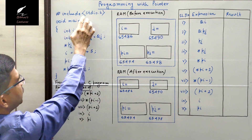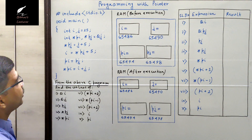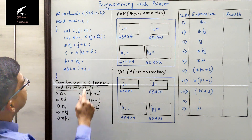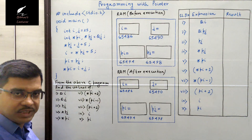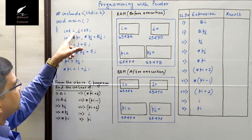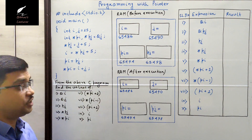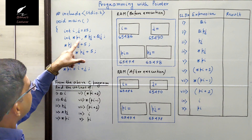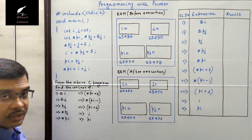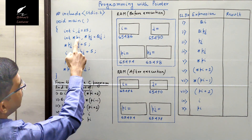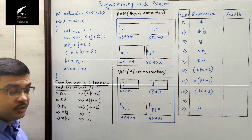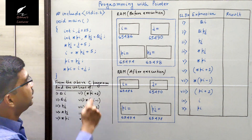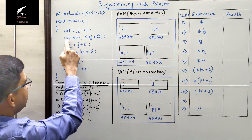We are including the stdio.h header file. This is the main method. In the very first line of the main method I have declared two integer variables, namely i and j. i has not been initialized but j has been initialized with the value 25. We have also declared another two variables pi and pj. Since the asterisk symbol is associated with pi and pj, that means they are single pointers — integer pointers.